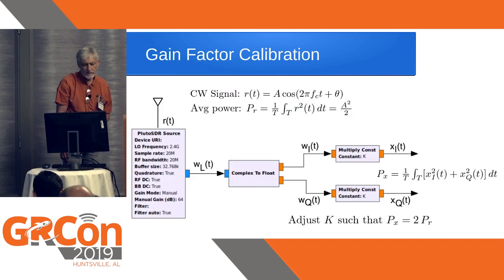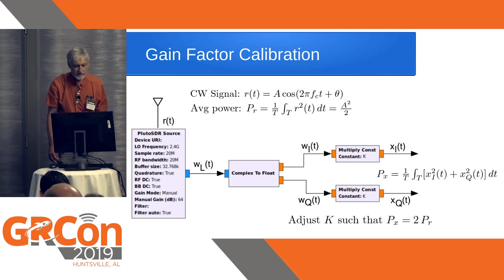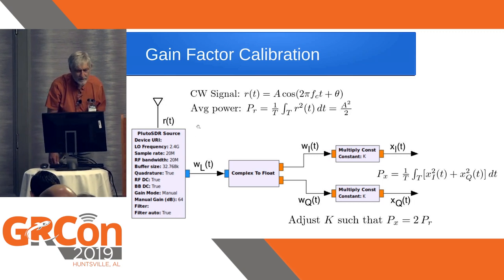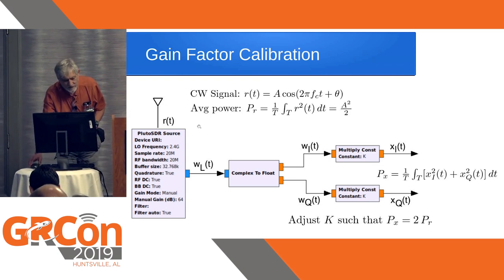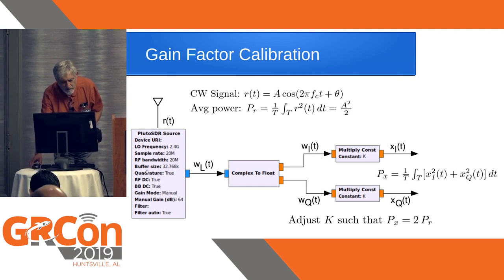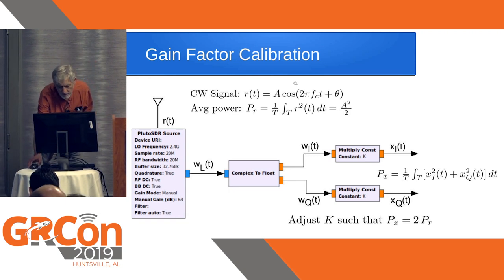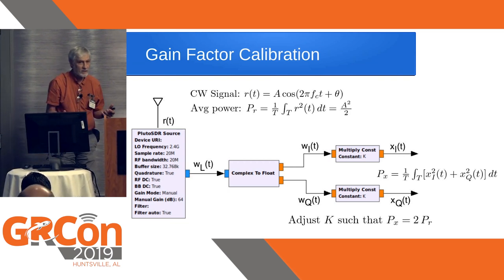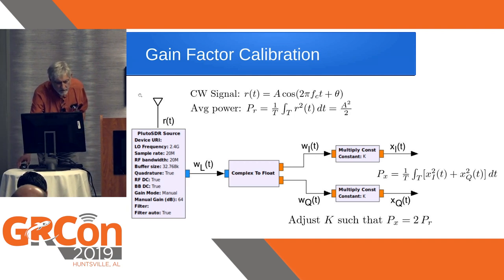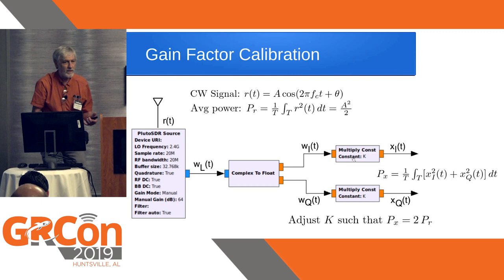Now talking about gain factor calibration: you get your radio frequency signal into a Pluto SDR, split it into real and imaginary parts, multiply by a constant to be determined, and get the in-phase and quadrature components out. The question is: how do you calibrate this? You have one input but two outputs because you're now operating in the complex low-pass domain.